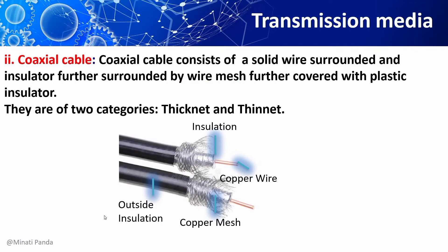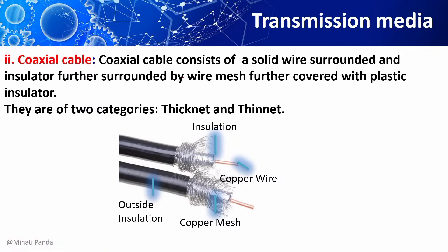Coaxial cable is a type of transmission line used to carry high-frequency electric signals with low losses. It is used in telephone trunk lines, broadband internet networking cables, high-speed computer data buses, cable television networks, and for connecting radio transmitters and receivers to their antennas.